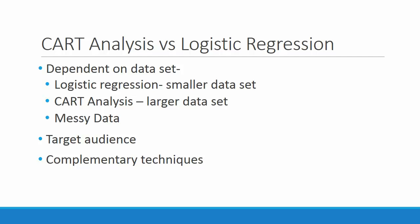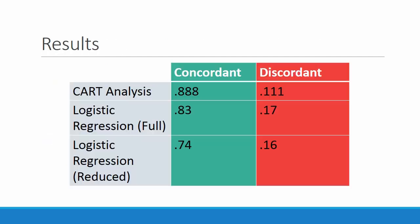However, both techniques are highly complementary and could be used together to conduct a robust test that is easy to communicate. We compared the two different techniques by looking at the number of concordant pairs in each. We find that the highest number of concordant pairs is in CART analysis, with 88% of the pairs being concordant. We then have the full logistic regression model with 83% of the pairs concordant, and in the reduced logistic regression model, 74% of the pairs are concordant. Therefore, we have some evidence to show that CART analysis was more useful than logistic regression in this specific study.